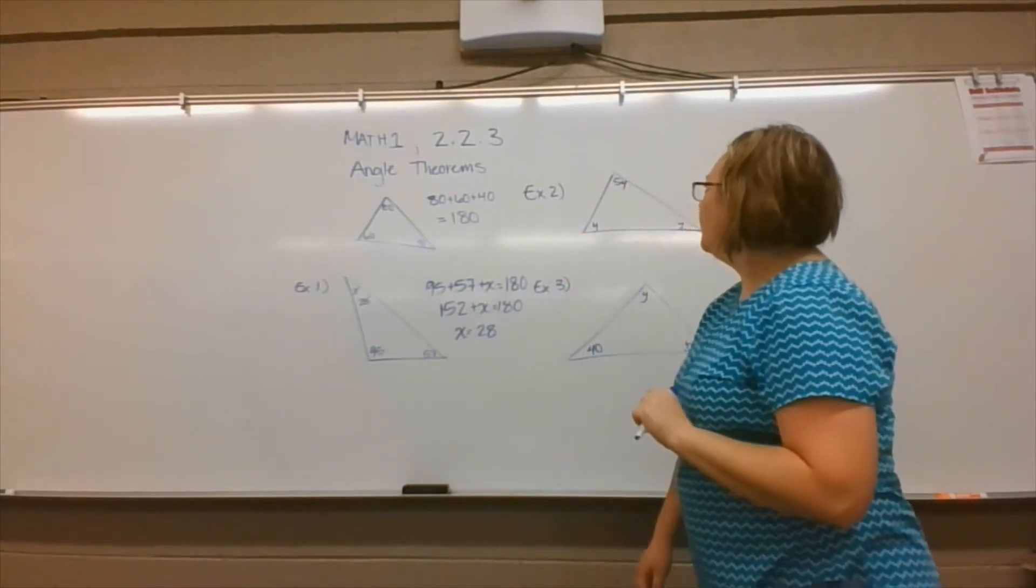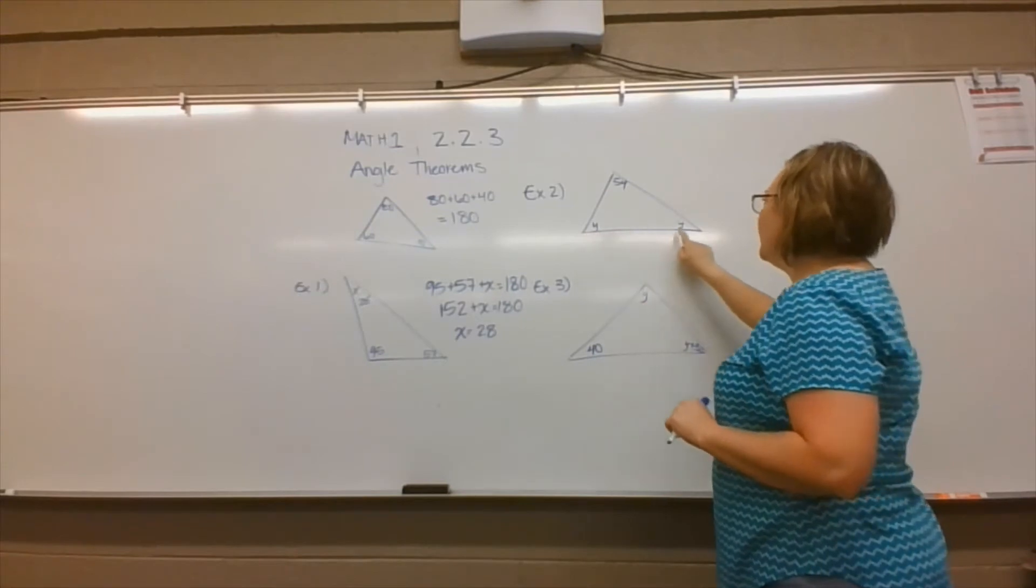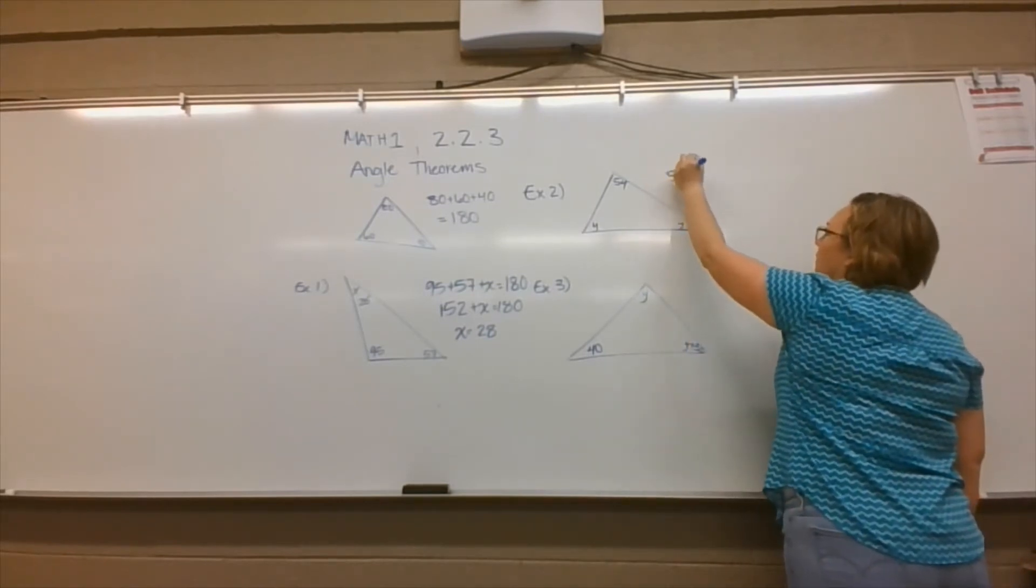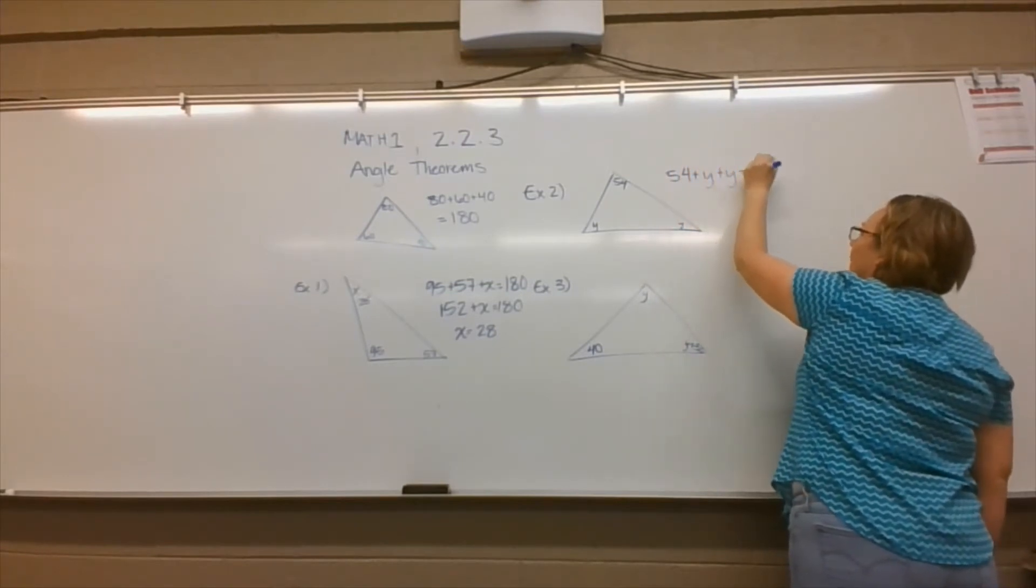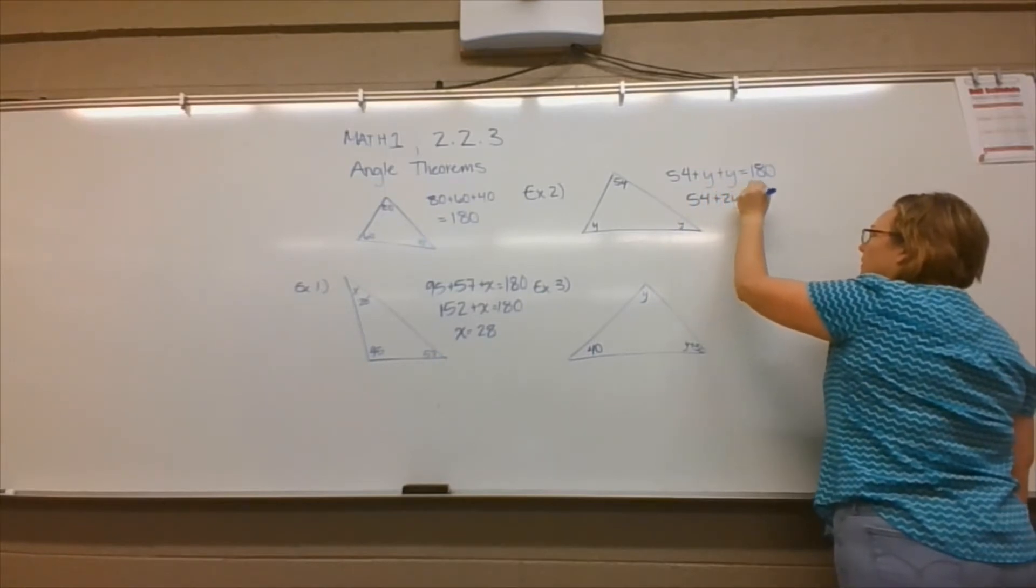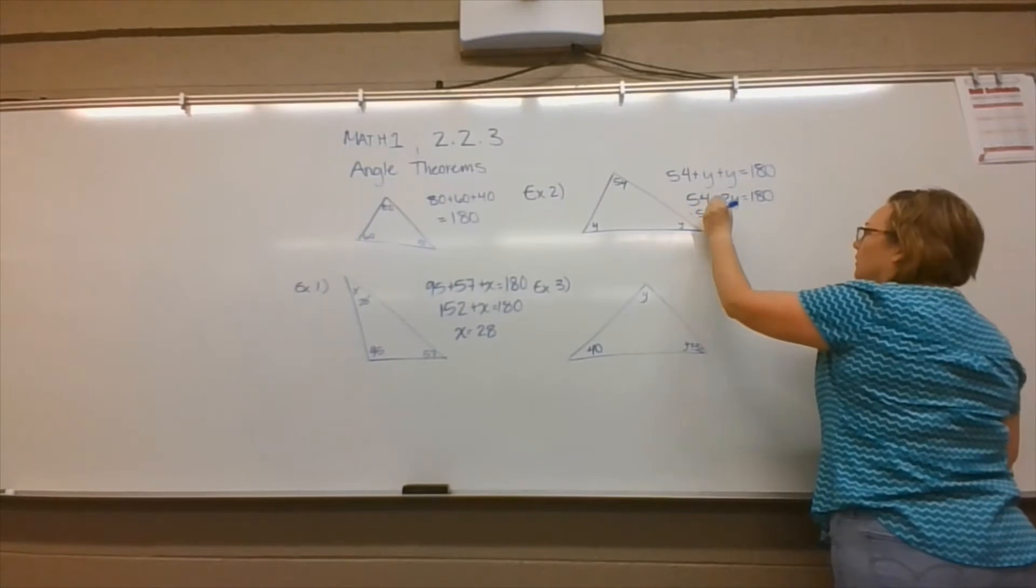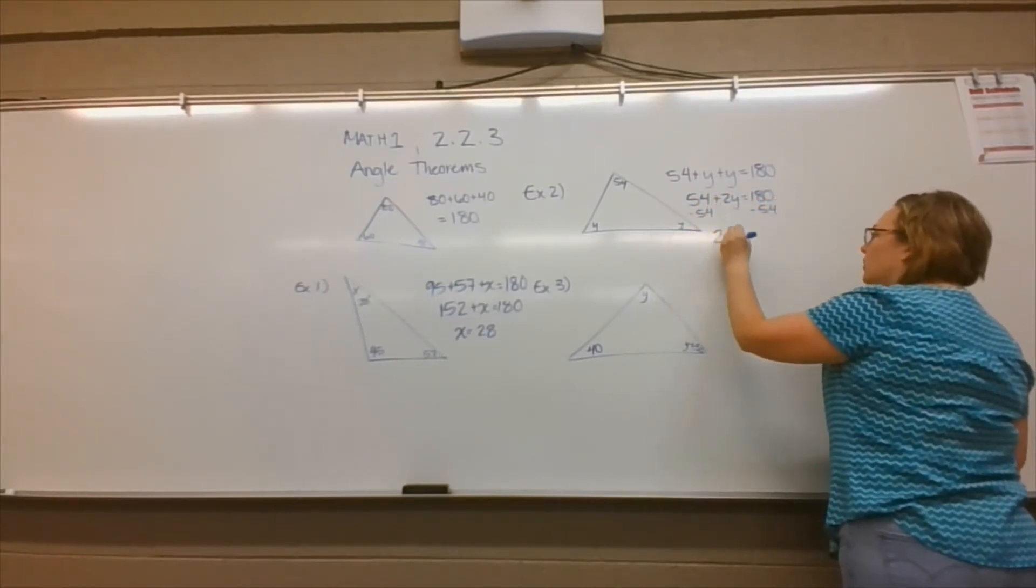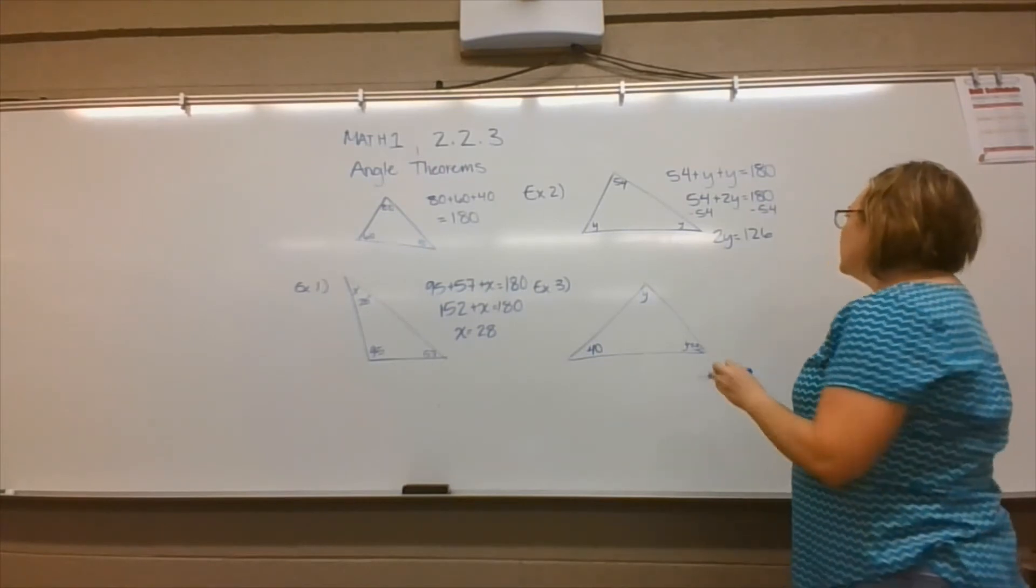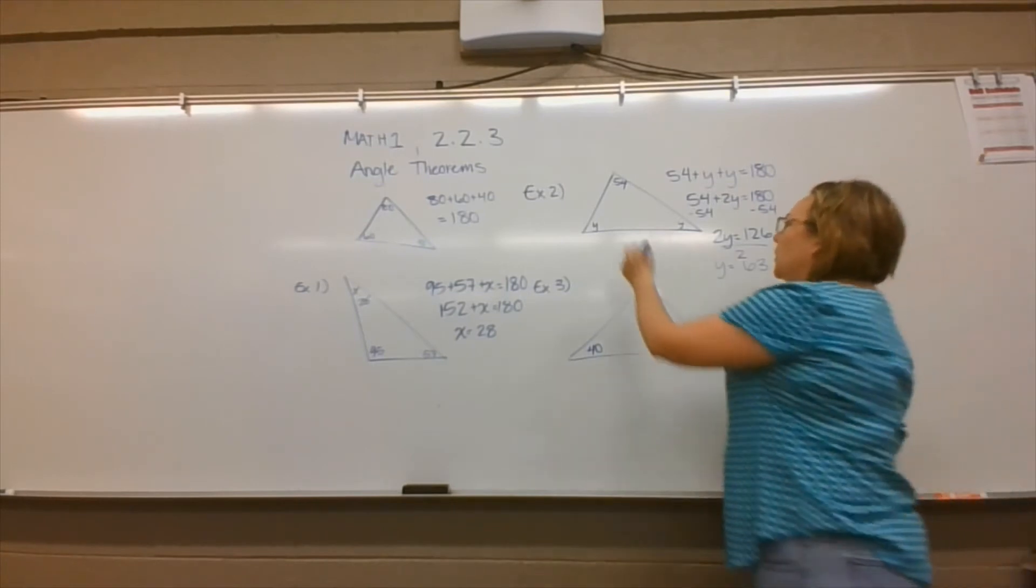Another example: you might be given one like this. Hopefully you can see that this is 54 degrees, and then we have a y and a y. You're asked to find the value of y. That means you add all of these together and set it equal to 180. So 54 plus y plus y equals 180. Two y's added together is 2y. Now we solve for y. We subtract 54 from 180, so 2y equals 126. Divide by 2 to get the value of y, which is 63. So both of these angles are 63 degrees.